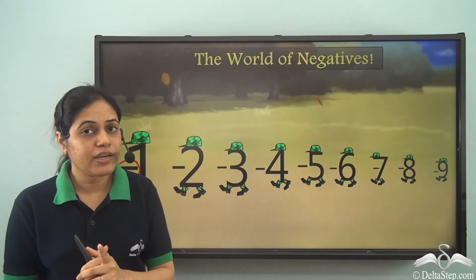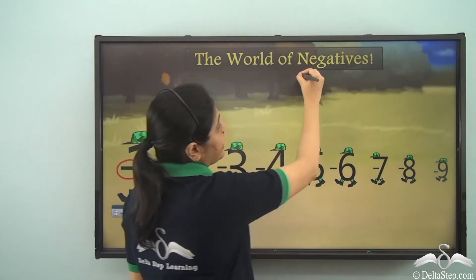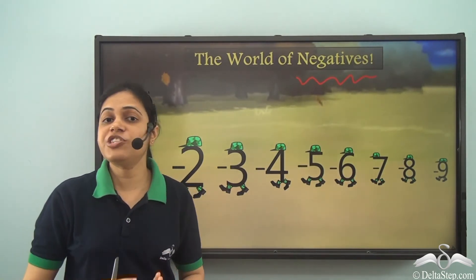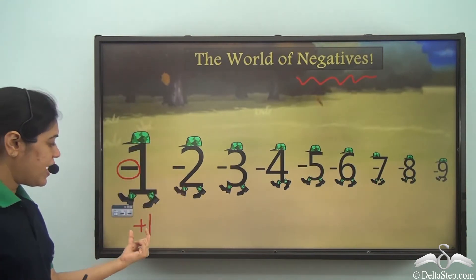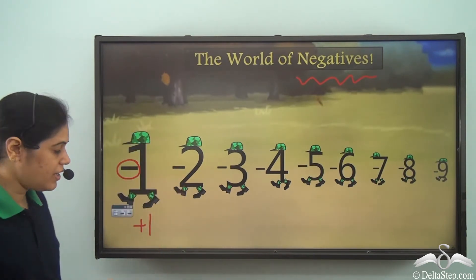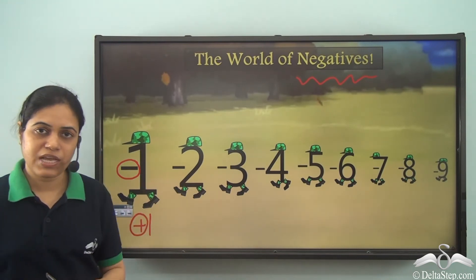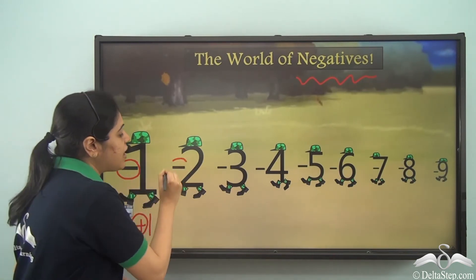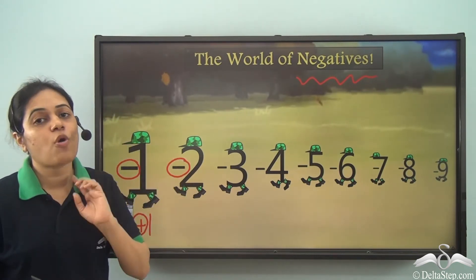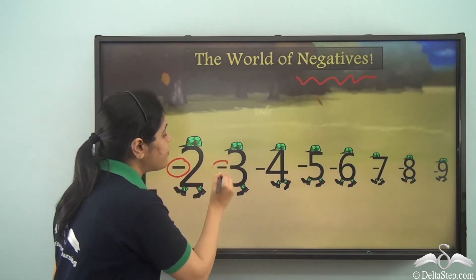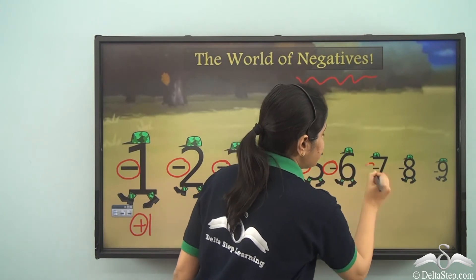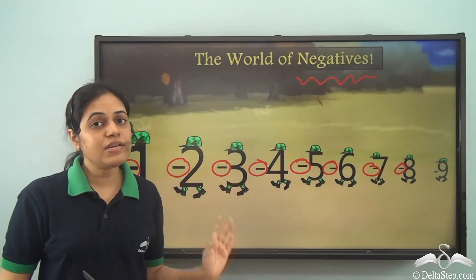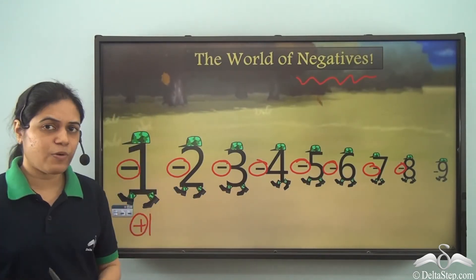Another important thing is that in the world of negatives all the numbers have a negative sign in front of them which they never hide. So if I have a positive one, I may or may not write the positive sign — in fact mostly we do not write this positive sign. But if the number has a negative sign it is always written. You can never ignore the negative sign — it is compulsory to write it. These numbers do not hide their negative signs like the positive numbers.